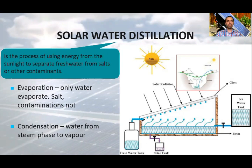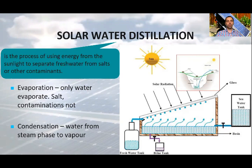This slide can be familiar from a previous video. I mentioned that with the energy from sunlight, salts or other contaminants can be separated from the water, because only water evaporates — salts and contaminants do not. After evaporation, the fresh water can be condensed, going from steam phase to liquid, and you have pure water. There are huge devices to produce fresh water, but there are really cheap ways to have some small amount of clean fresh water. Let's see what can be done.